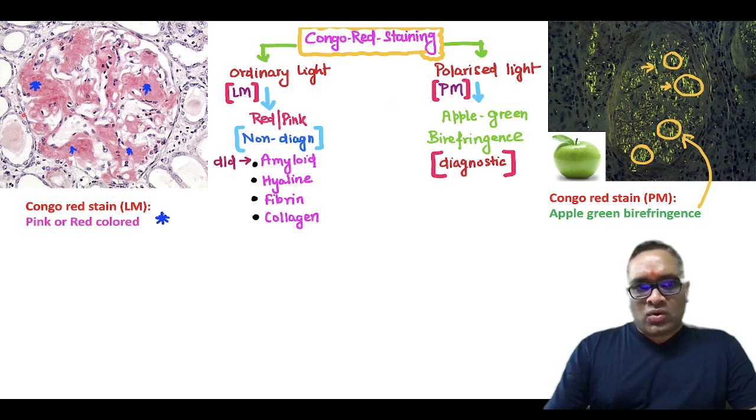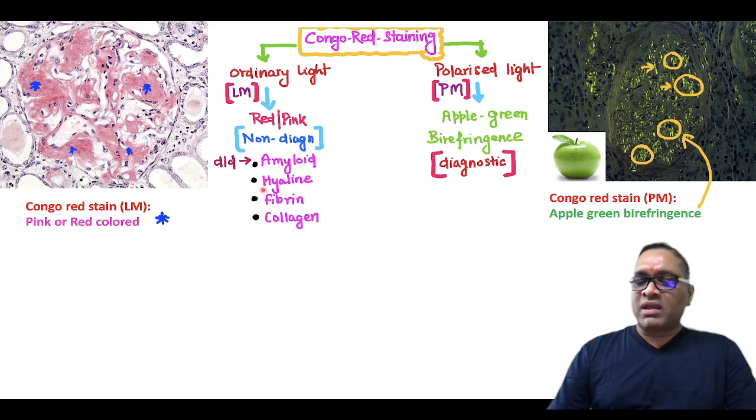Under ordinary light microscopy, when you see the renal biopsy you can observe extracellular, acellular pink amorphous material. Remember, this red-pink material is non-diagnostic because it could be amyloid, hyaline, fibrin, or collagen.